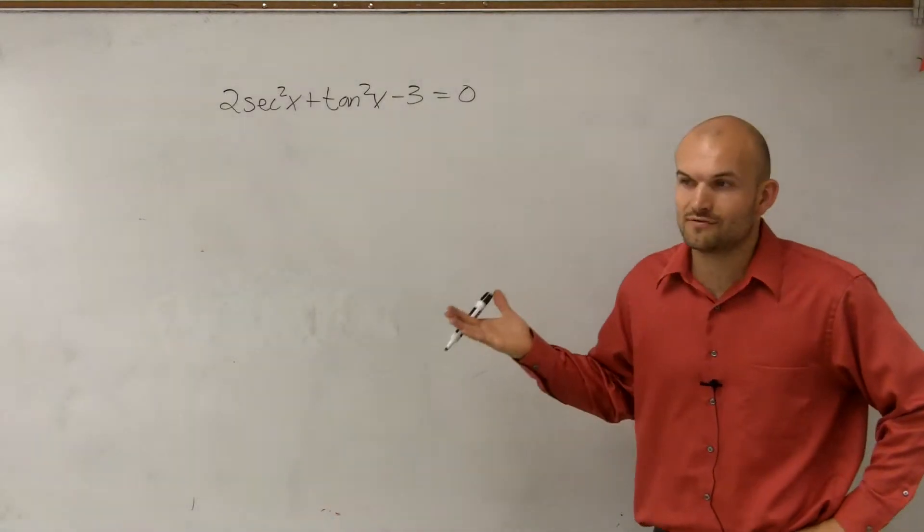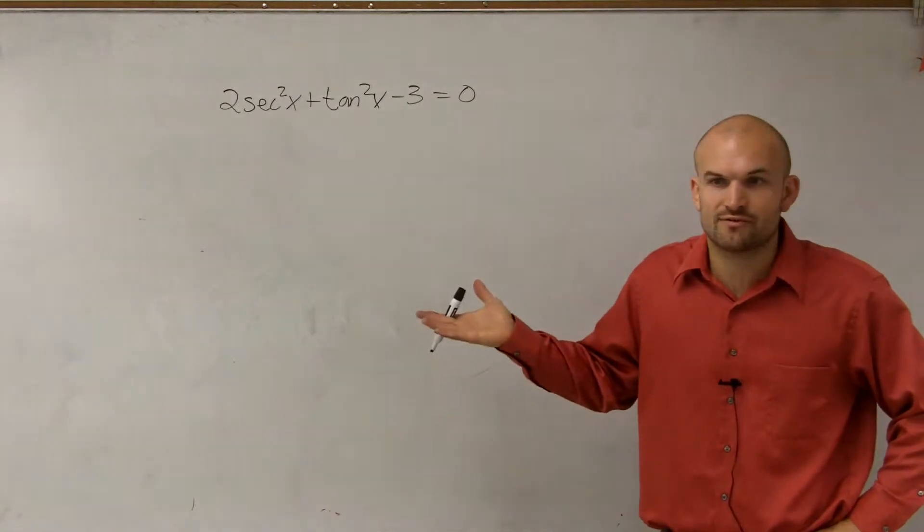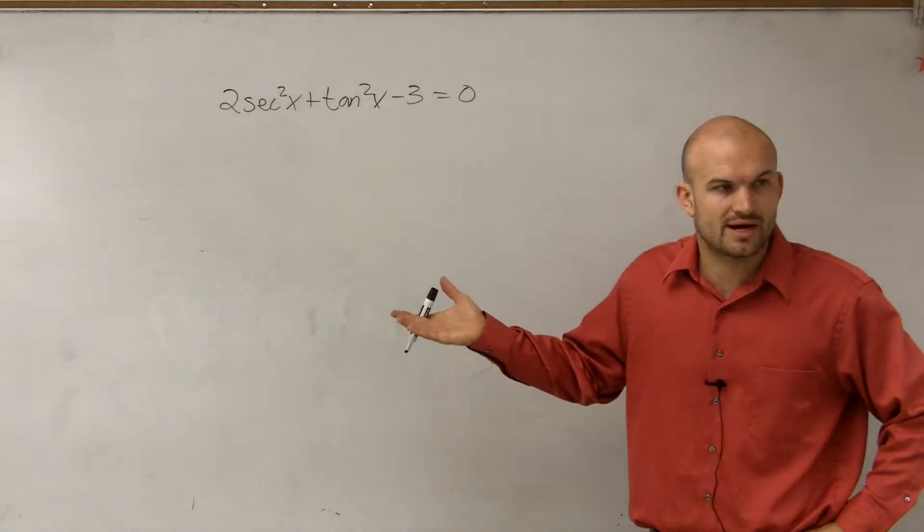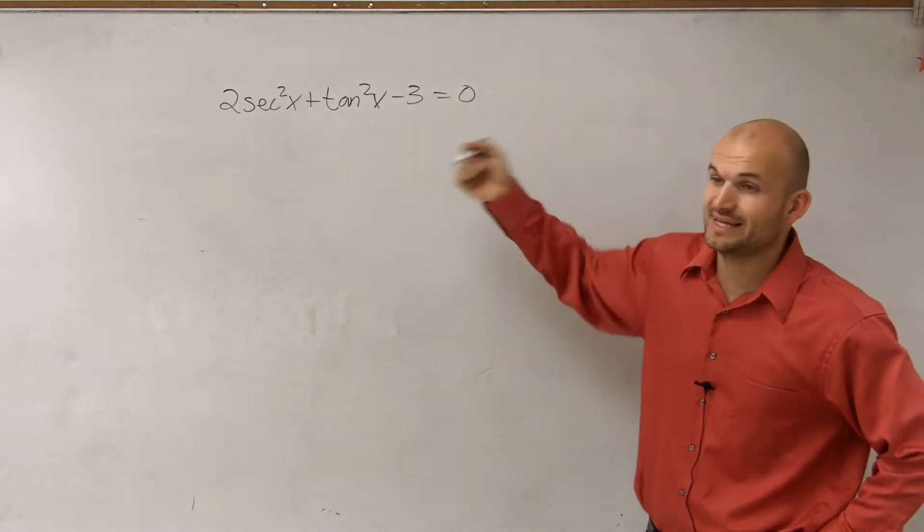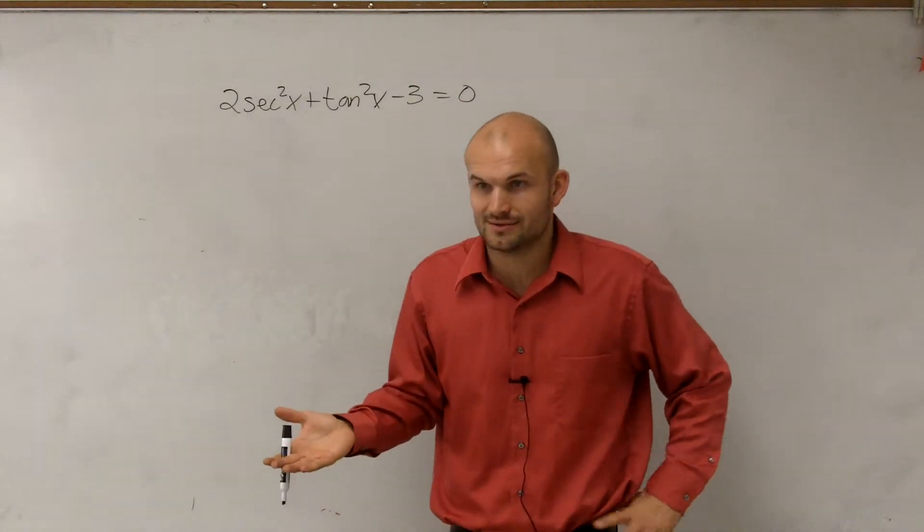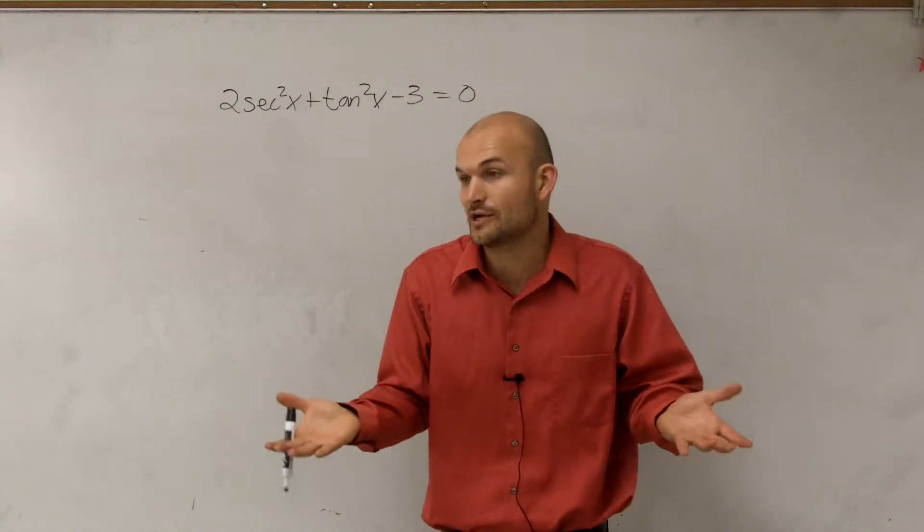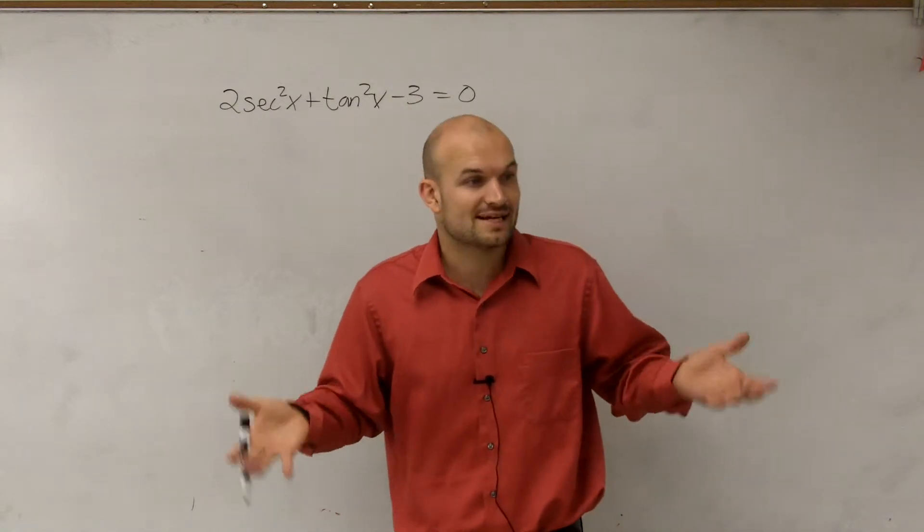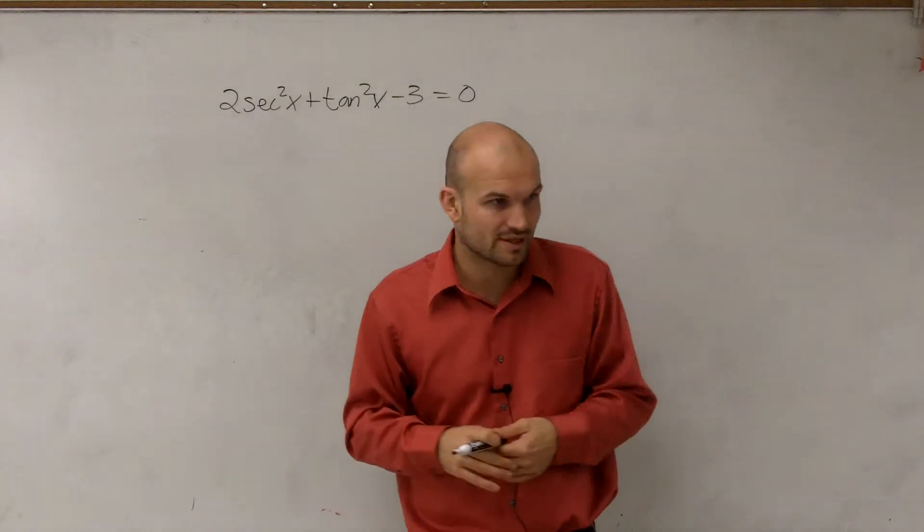The problem with trying to solve this is we have two different functions: secant and tangent. However, secant and tangent are like brother and sister. They work in our Pythagorean identities. When we have tangent squared and secant squared, we know they relate to each other.